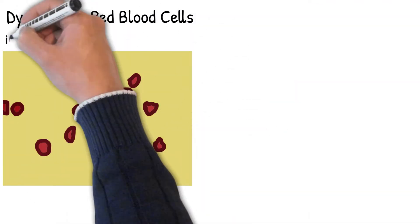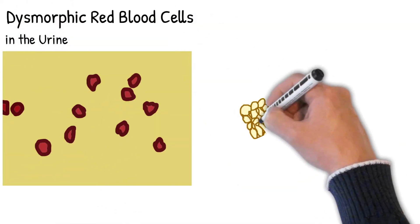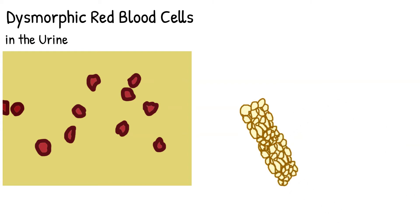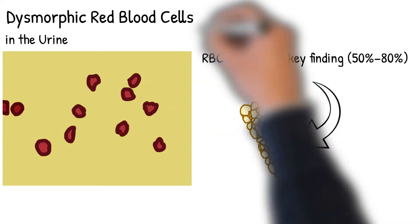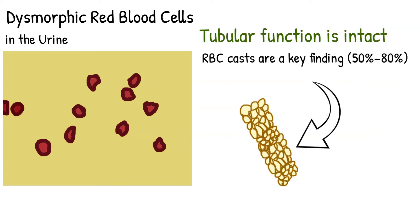Clinically, dysmorphic RBCs are present with irregular membranes. RBC casts are a key finding, 50%-80%. Occasionally, white blood cells are present. Tubular function is intact.